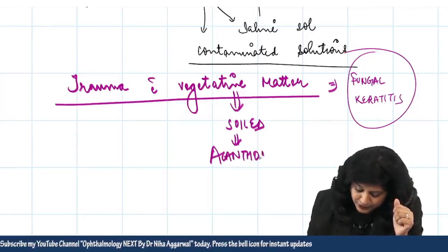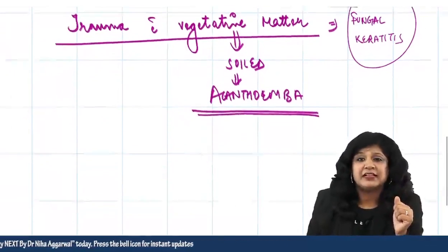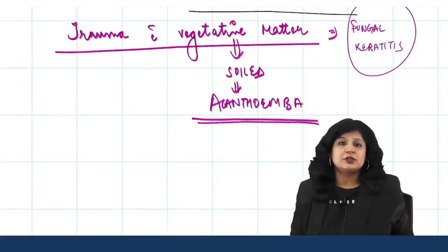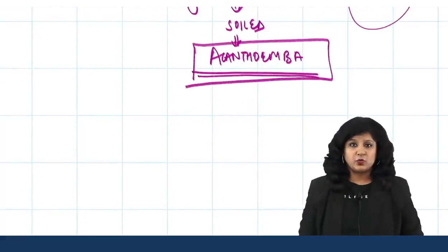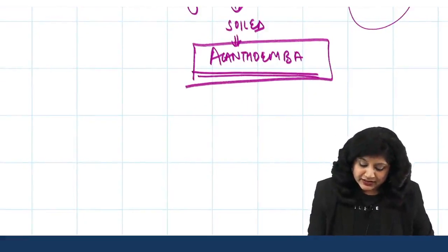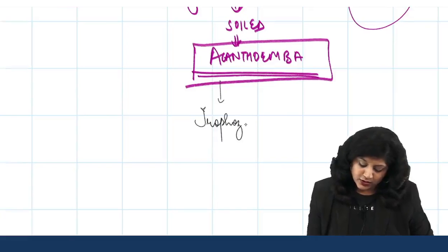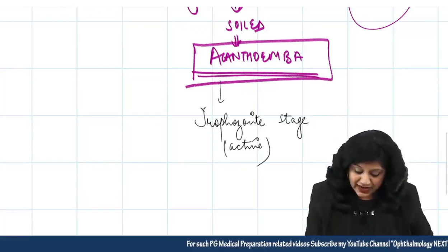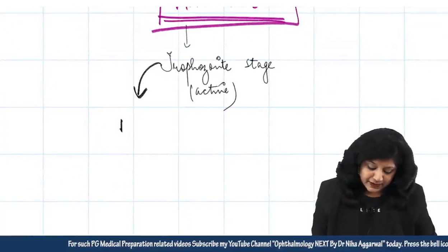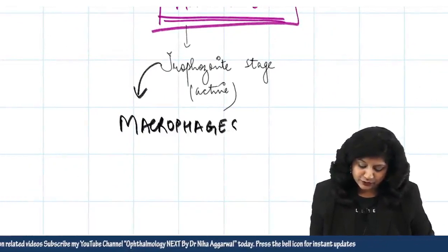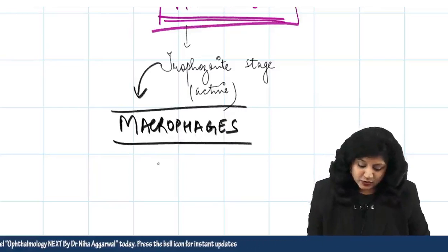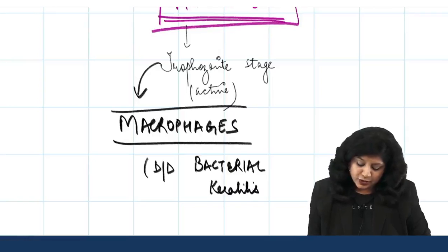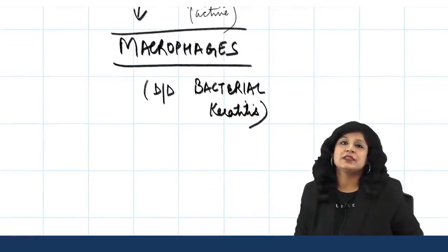Acanthamoeba has a lot of confusing clinical profiles, which is why exam questions often pair it with fungal or bacterial keratitis. It has two stages: a cystic stage and a trophozoite stage. The trophozoite stage is the active phase, and these trophozoites resemble macrophages — making the condition look like bacterial keratitis. This is why it is confused with both bacterial and fungal keratitis.